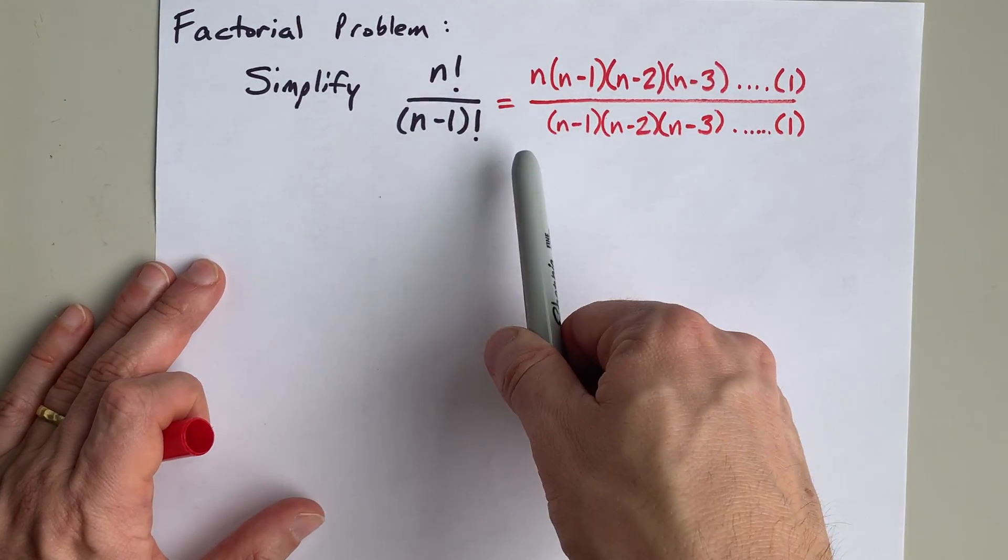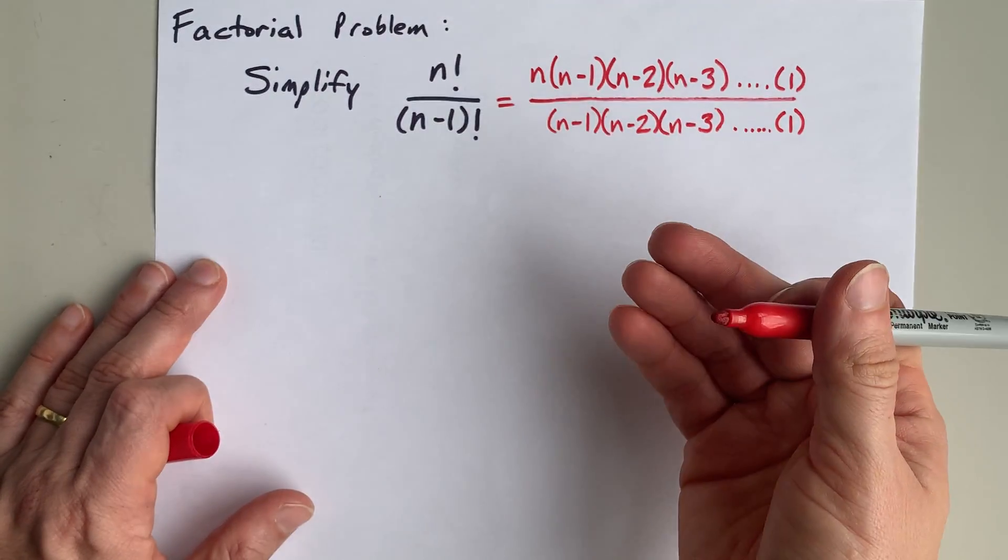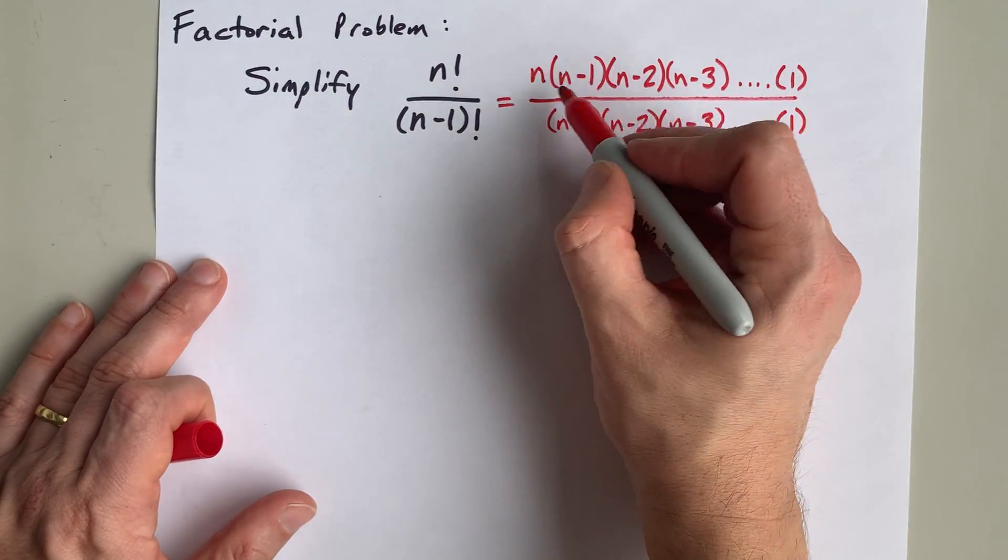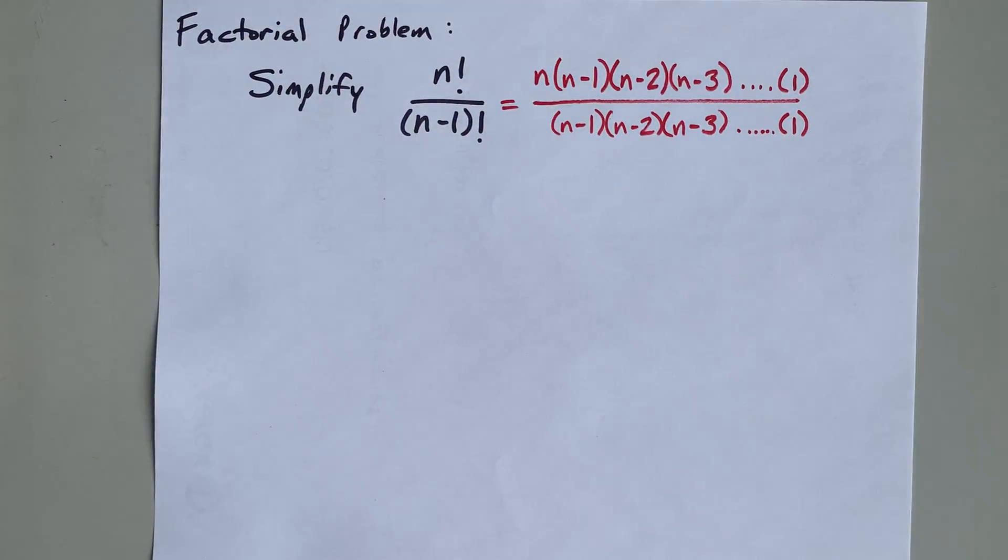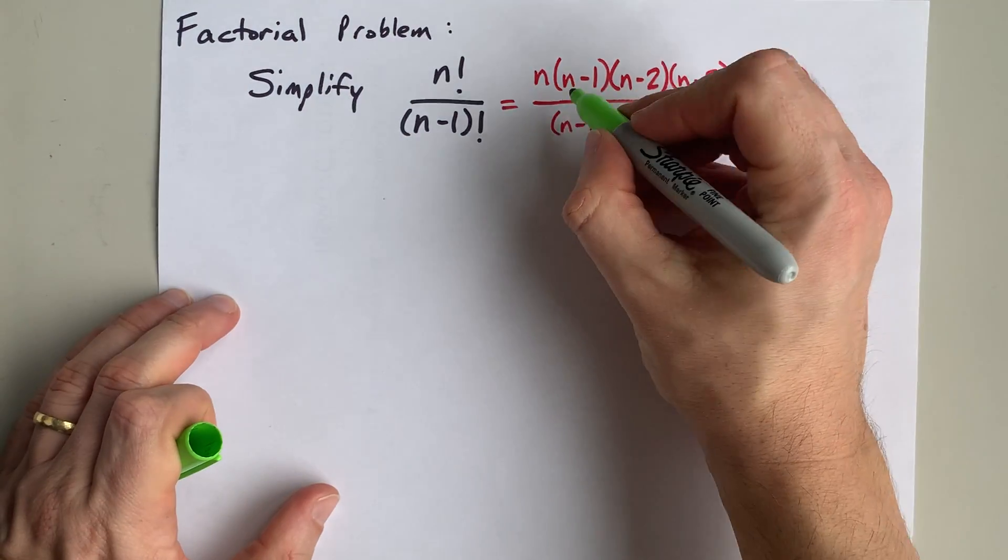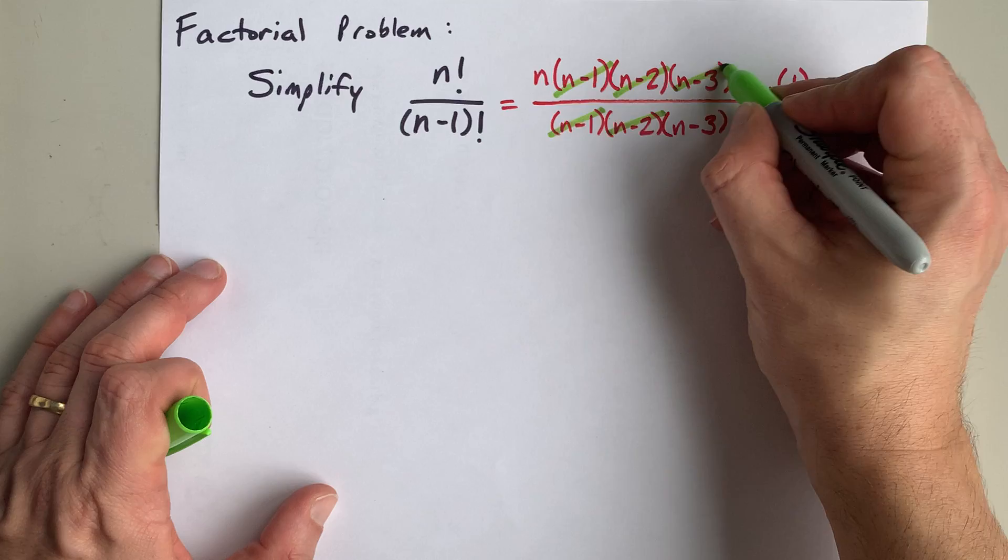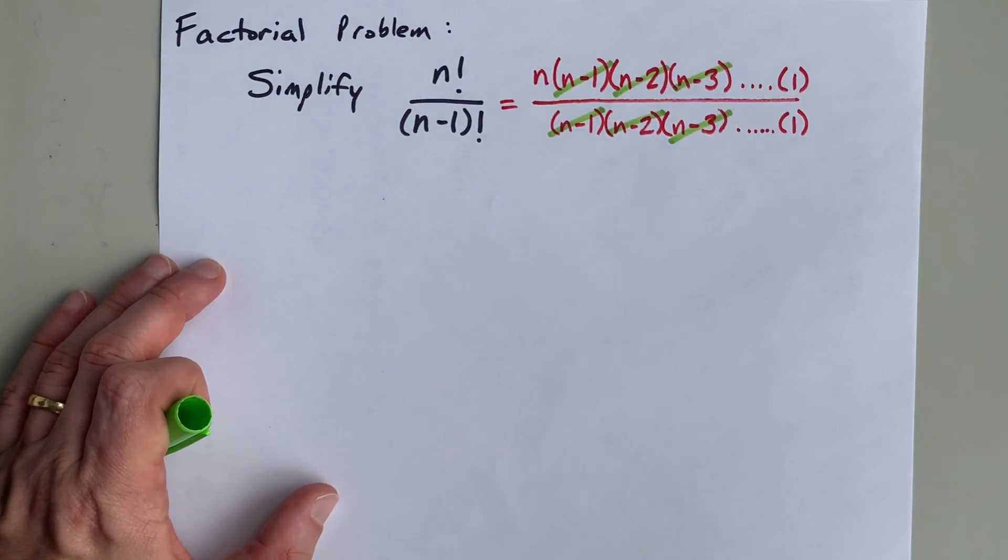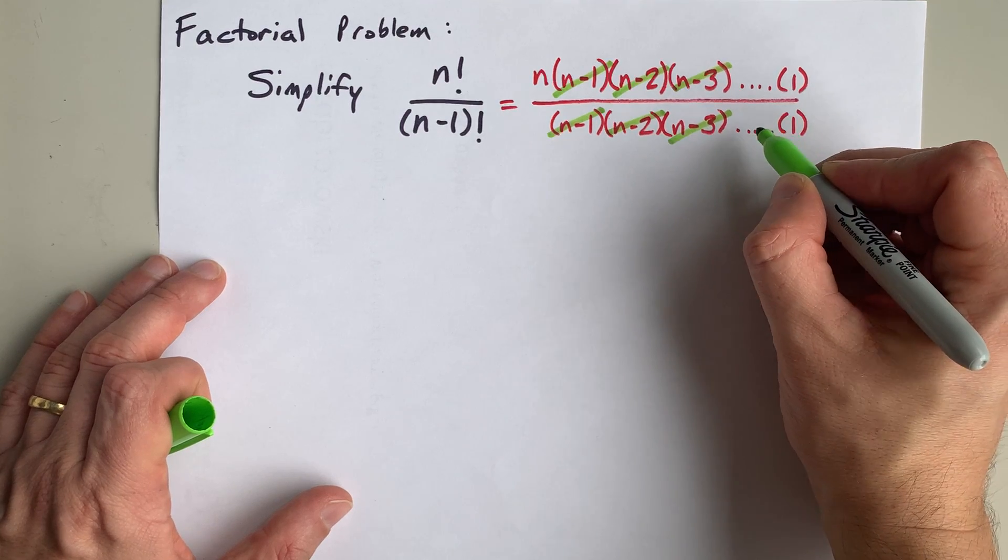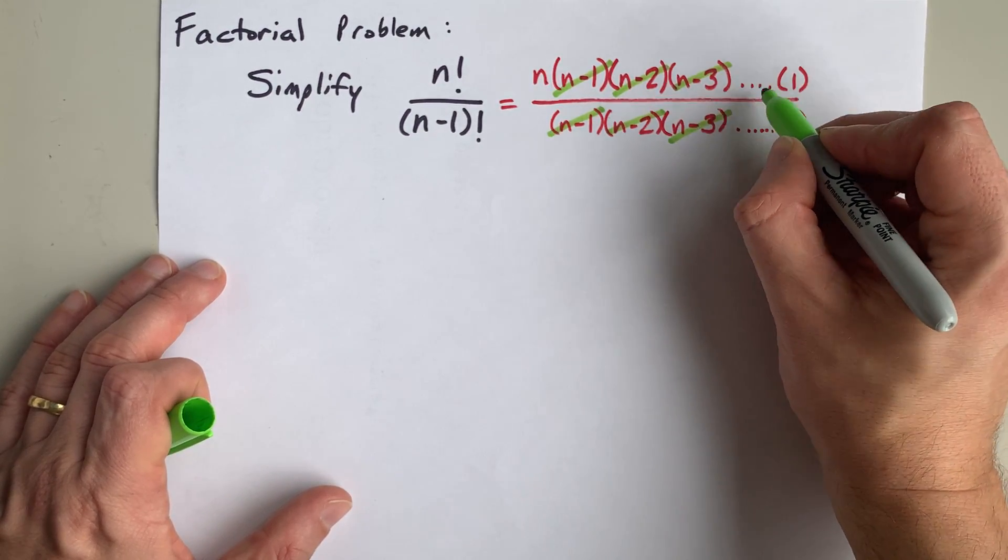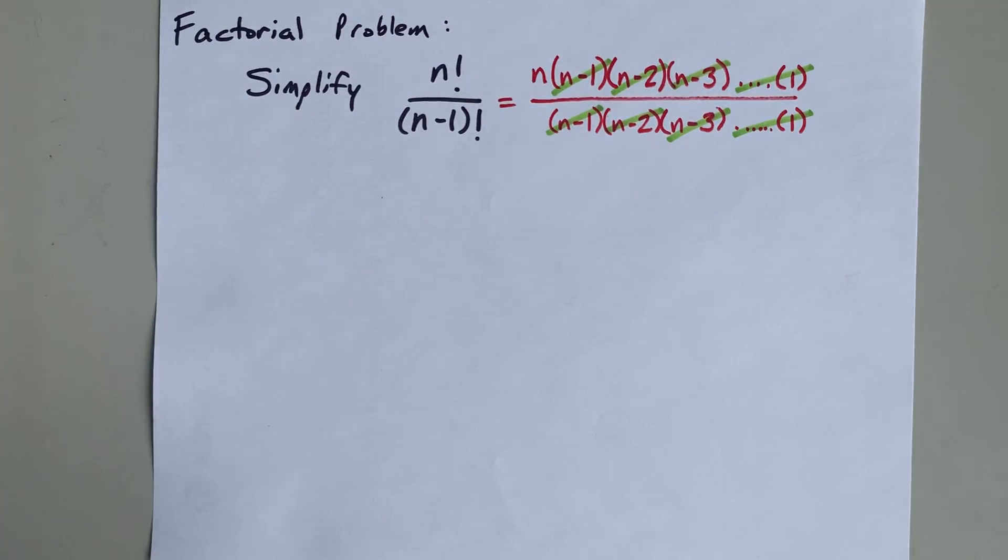Now, because these are all multiplied together on the top and bottom, you're able to cancel chunks in brackets as long as they appear in both the top and the bottom. So, I have n minus 1 on both, so those cancel, n minus 2, n minus 3. Even if you listed n minus 4 for one of these and not for the others, these dotted lines mean everything all the way down to 1, so they cancel as well.